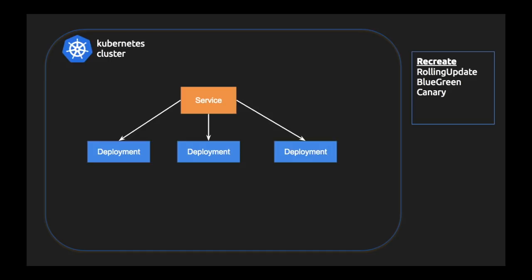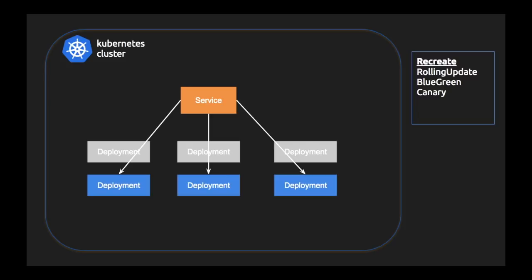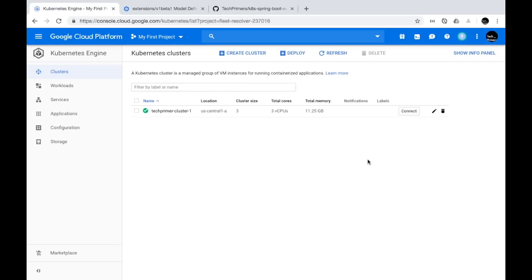With the recreate strategy, we destroy all running instances and then recreate new ones — as the name suggests, it blindly recreates your instances. This is mostly used when you don't want the additional overhead of creating new pods alongside existing ones, since every new pod incurs cost. Recreate is useful for development environments or applications where you are okay with destroying and recreating them and don't need to worry about resiliency.